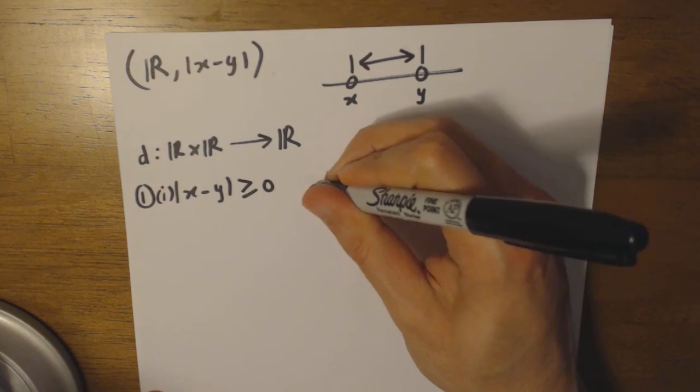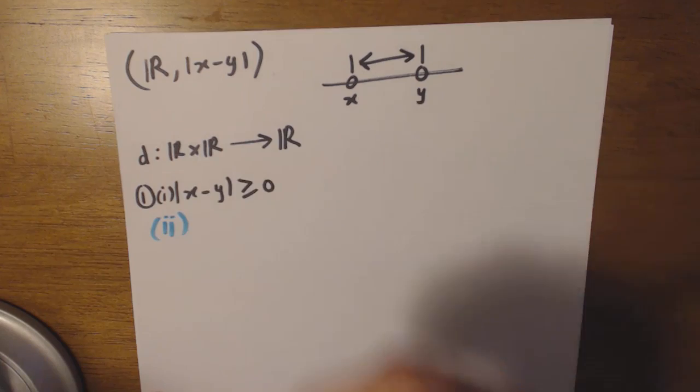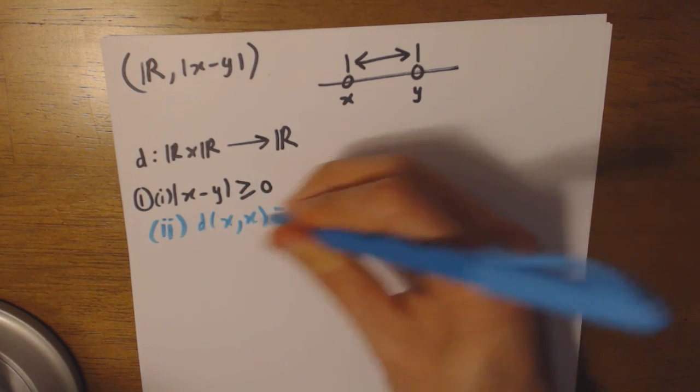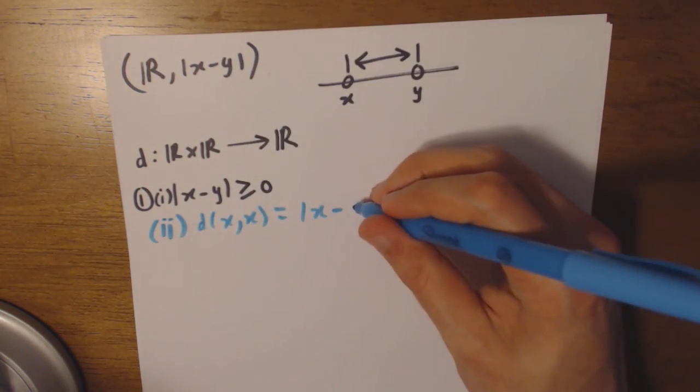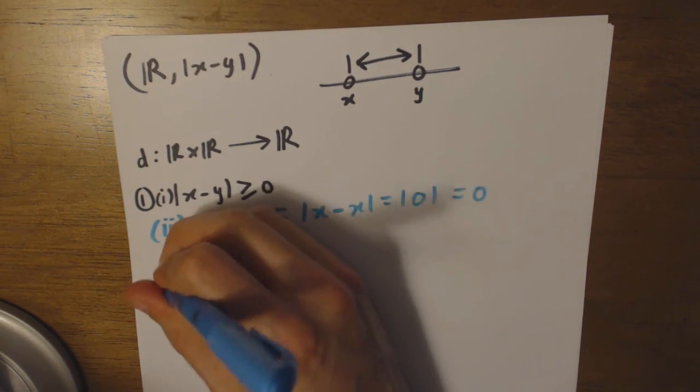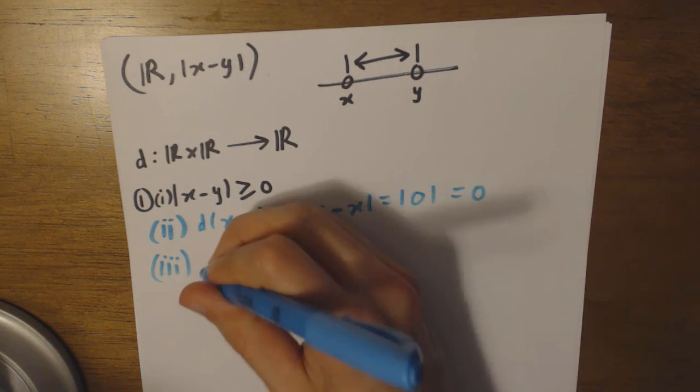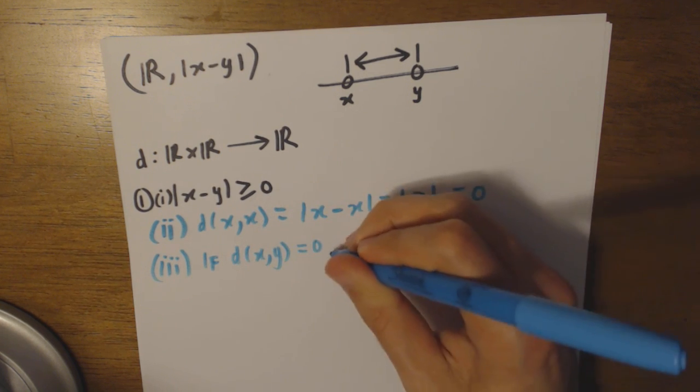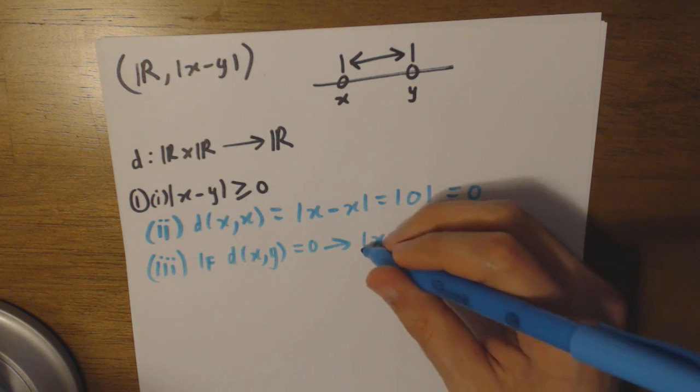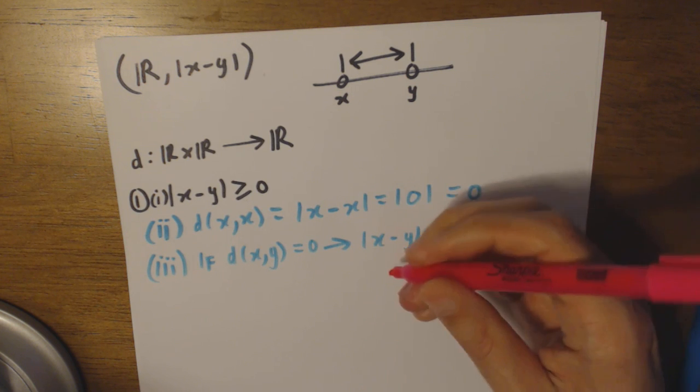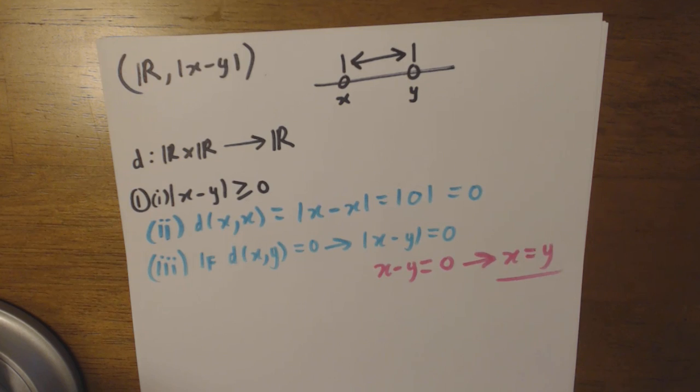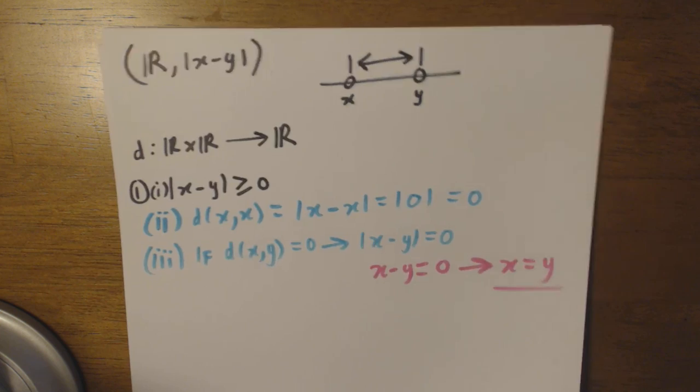Sub-condition two requires that d(x,x), which equals |x-x|, should equal zero. Indeed it is because x minus x will always give you zero, and absolute value of zero is zero. Number three: if d(x,y) equals zero, which means that |x-y| equals zero, then we must have that x equals y. If absolute value of x minus y equals zero, this is the same thing as writing x minus y equals zero, which is the same as x equals y. So positive definiteness is satisfied by this function, absolute value of x minus y.